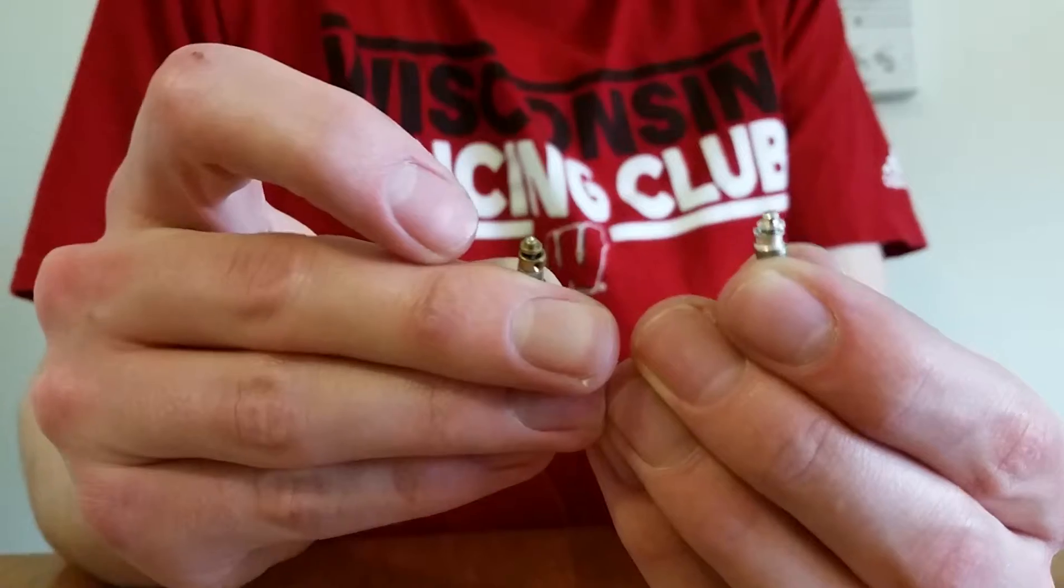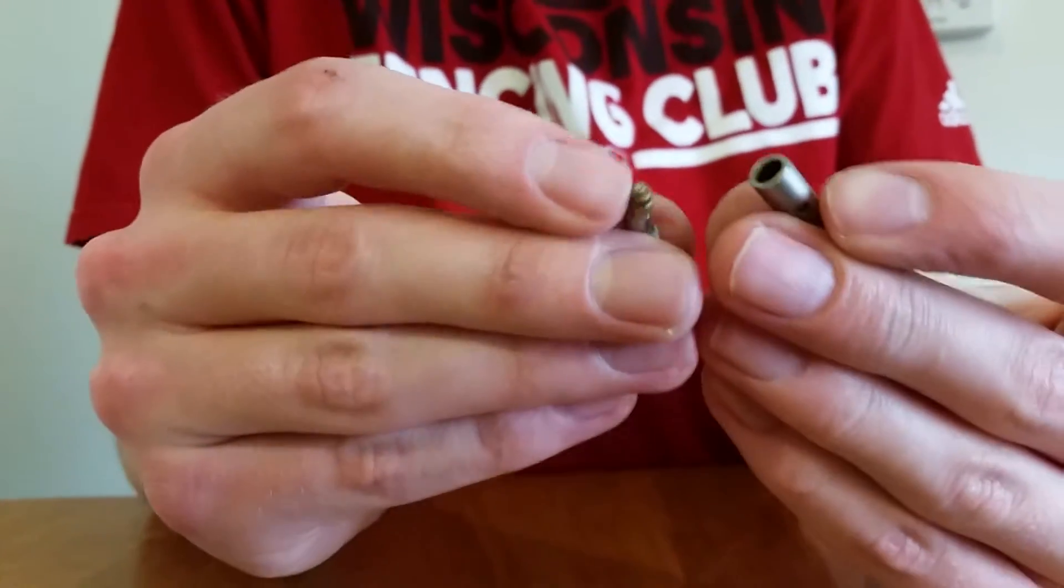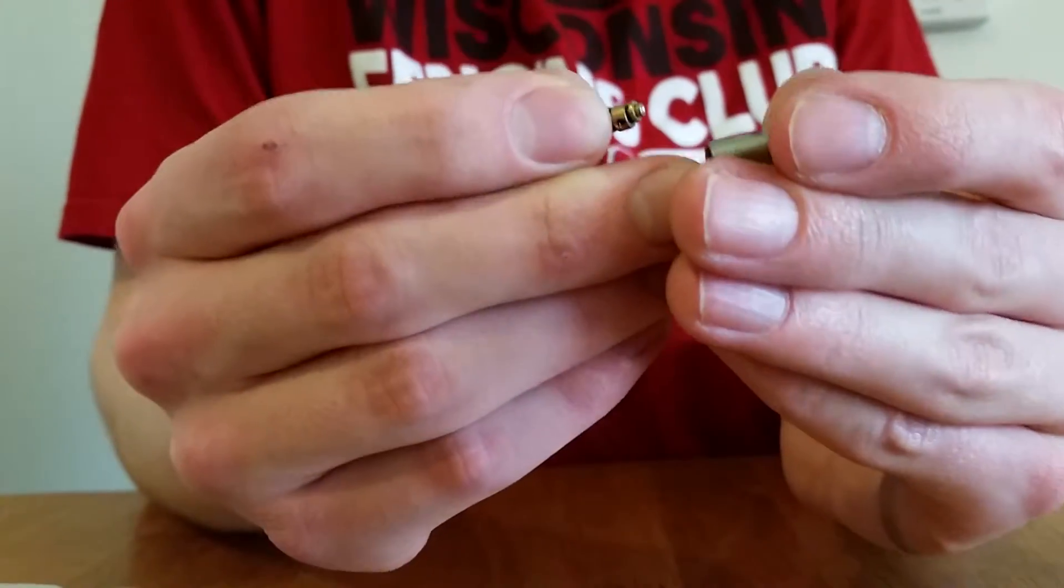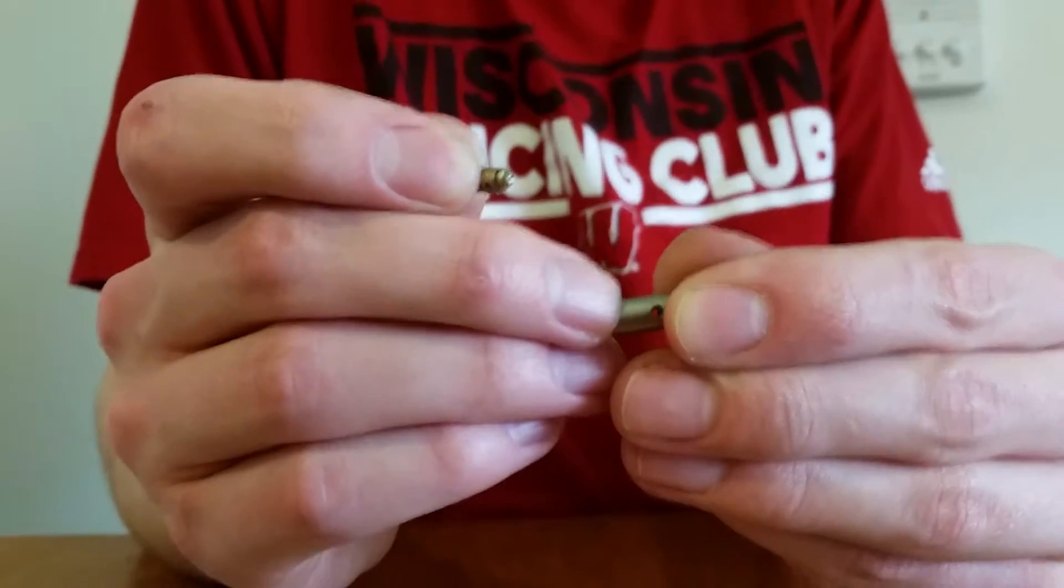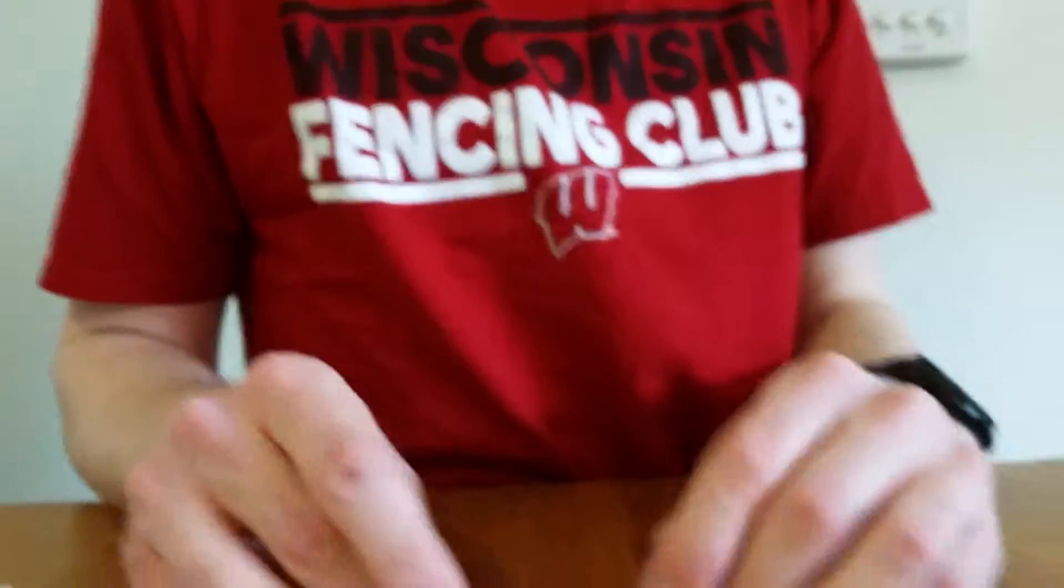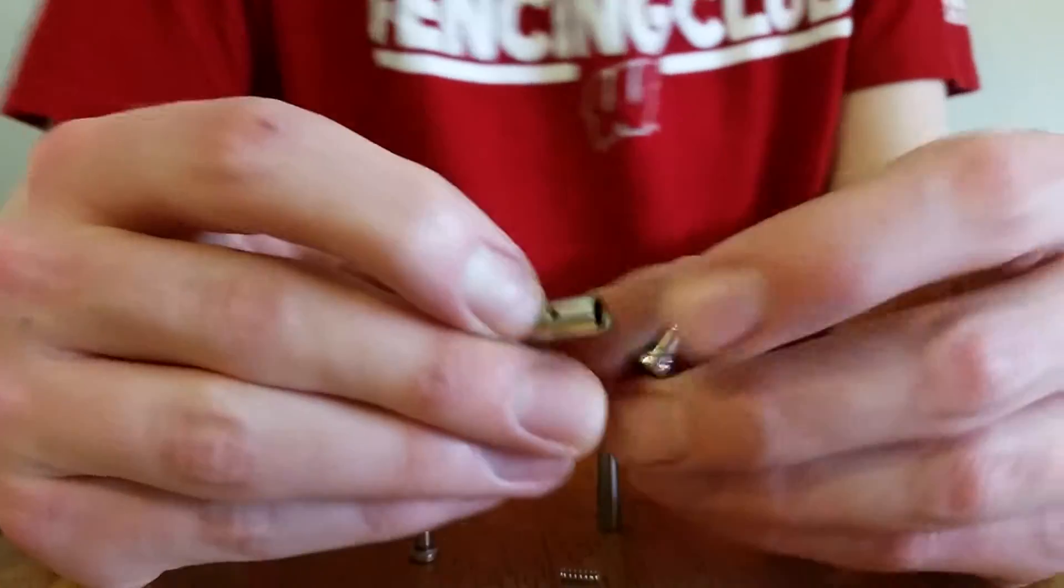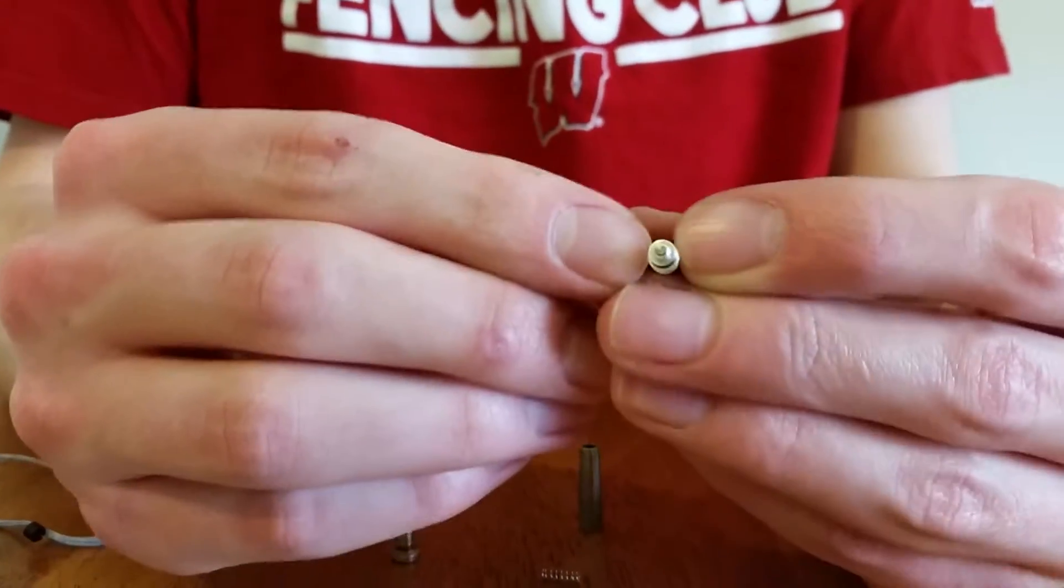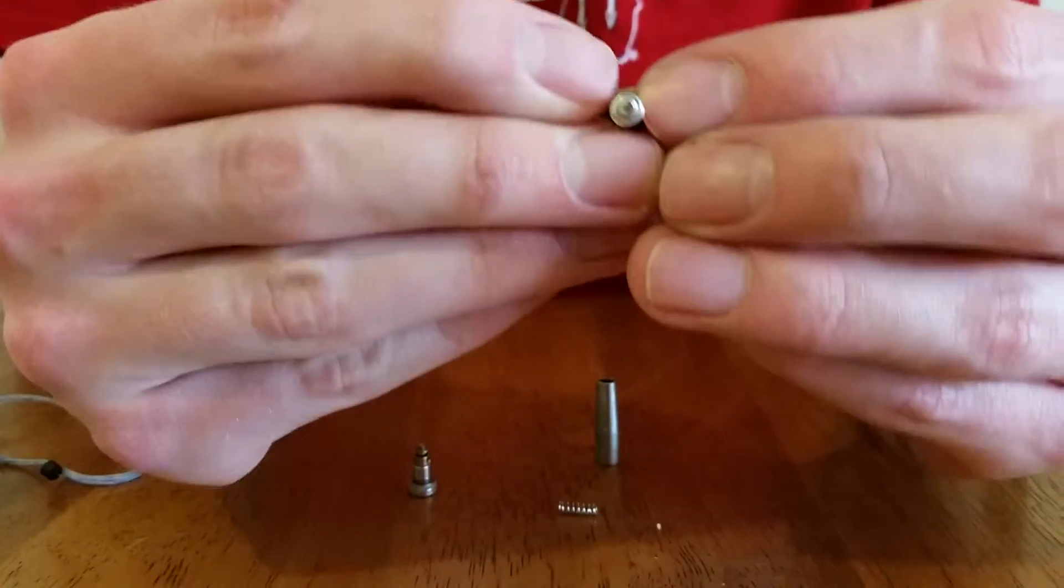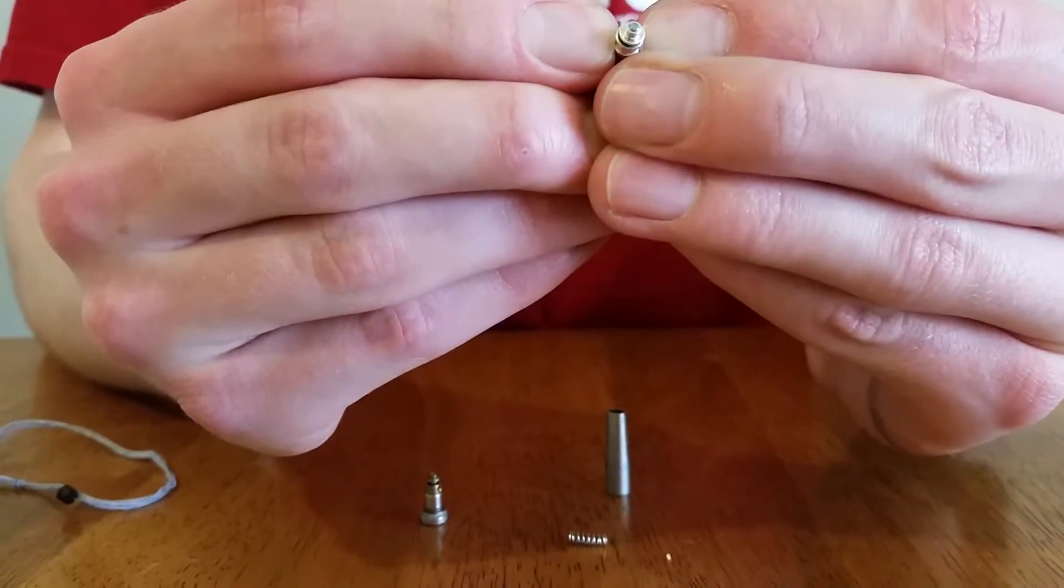With a French setup the screws that you use actually go straight into, they screw directly into the sleeve. There are no threads on the barrel, it just screws directly into the sleeve. With a German setup it'll actually screw into the barrel and then just pin the sleeve, it doesn't thread onto the sleeve. So instead of screwing into it you just have a couple of nails in there essentially.